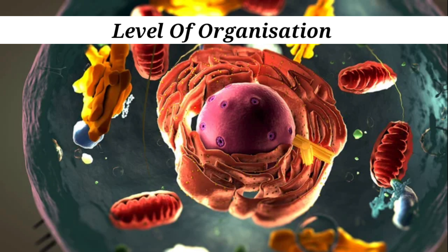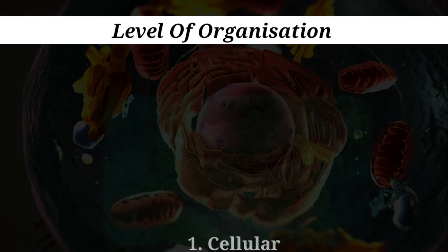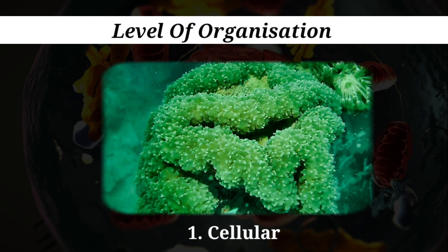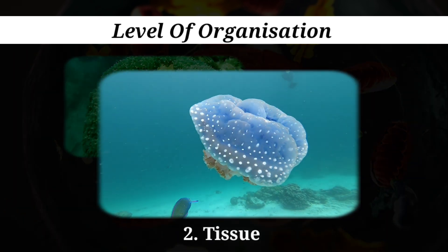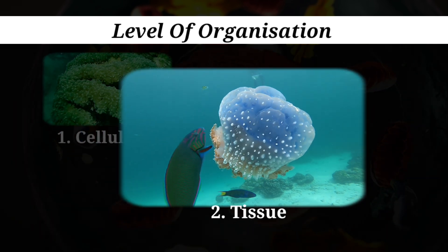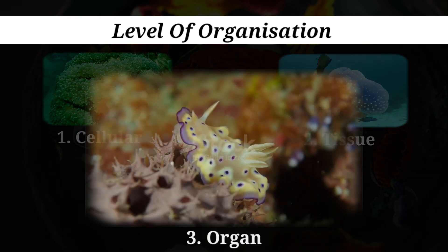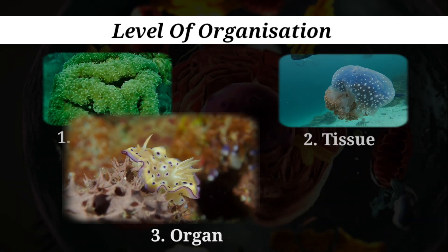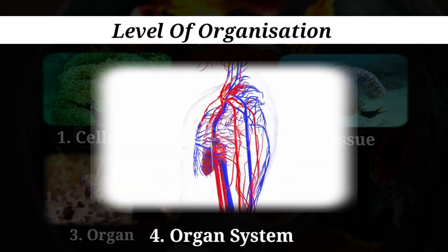Level of organization is the first basic fundamental feature that deals with the pattern of cell organization in an animal. There are four patterns of cell organization: first, cellular; second, tissue; third, organ; and fourth, organ system.